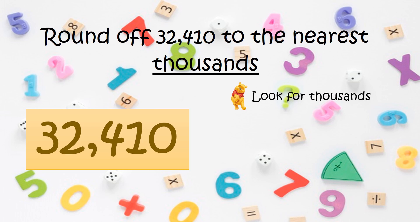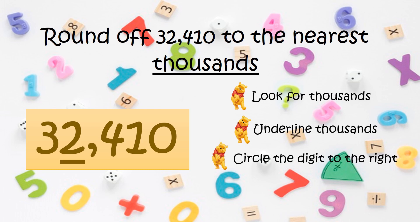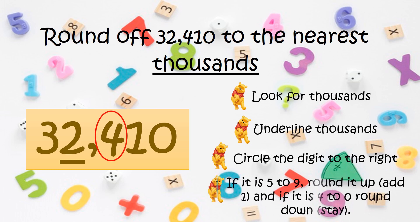First, look for the thousands place digit and underline it. Sino nga ba ang nasa thousands place? Correct! Si 2. Then circle the digit to the right. Sino ang nasa right ni 2? Very good! Si 4. If the circled digit is 5 to 9, round it up — add 1. And if it is 0 to 4, round down or stay.